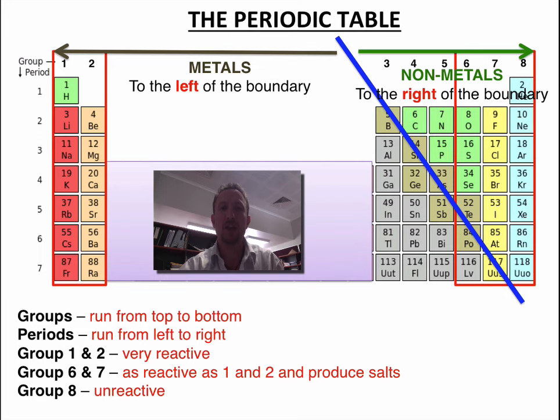As well as this what else do we know? Well we know that if we run down a column from top to bottom we've got something called a group. If we run from left to right or across a row we've got a period. Now we also notice that all of the columns are given specific numbers and you can see that in black along the top. We run from 1, 2 all the way through to number 8 right at the very end.